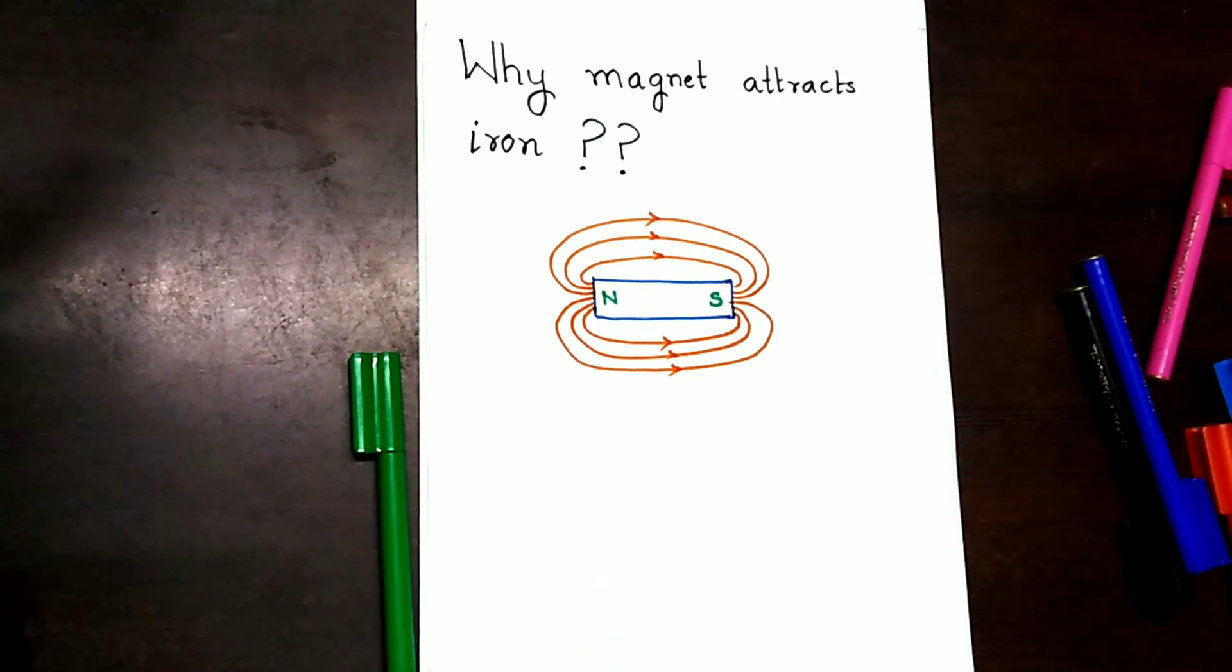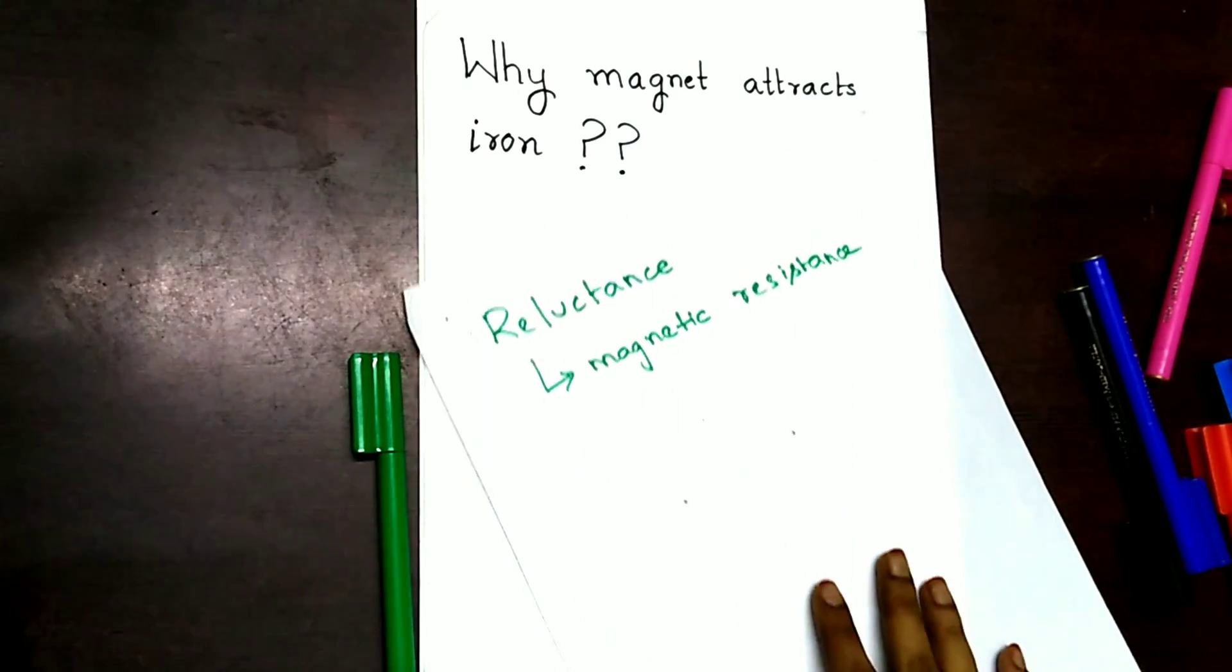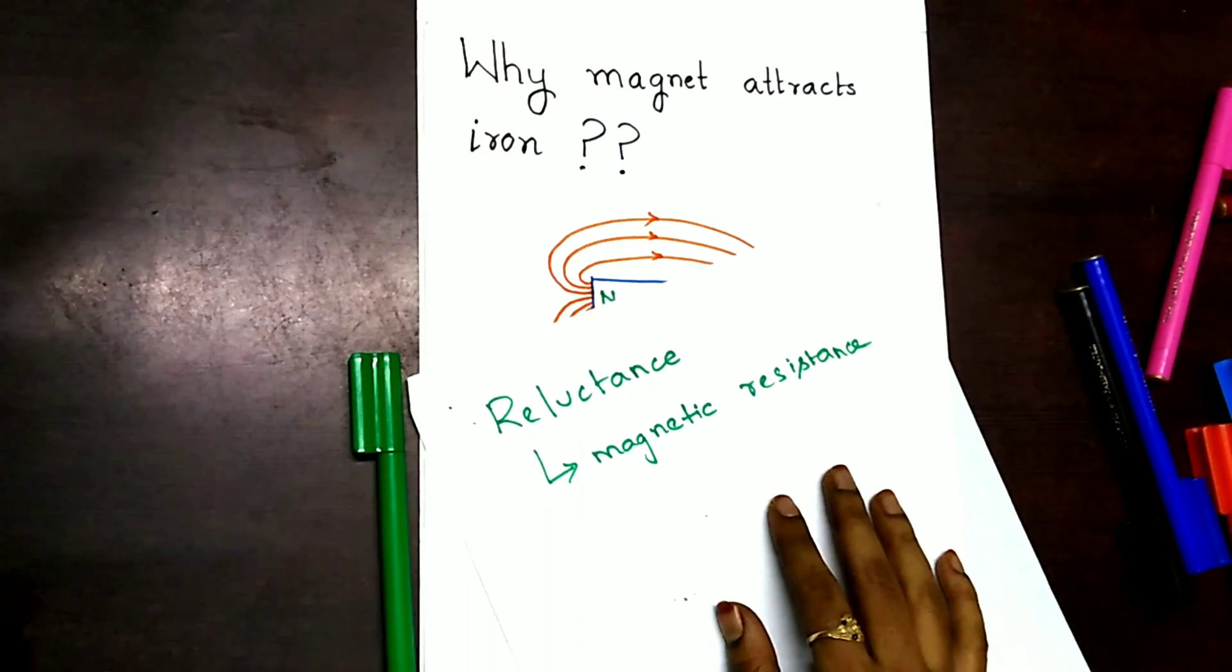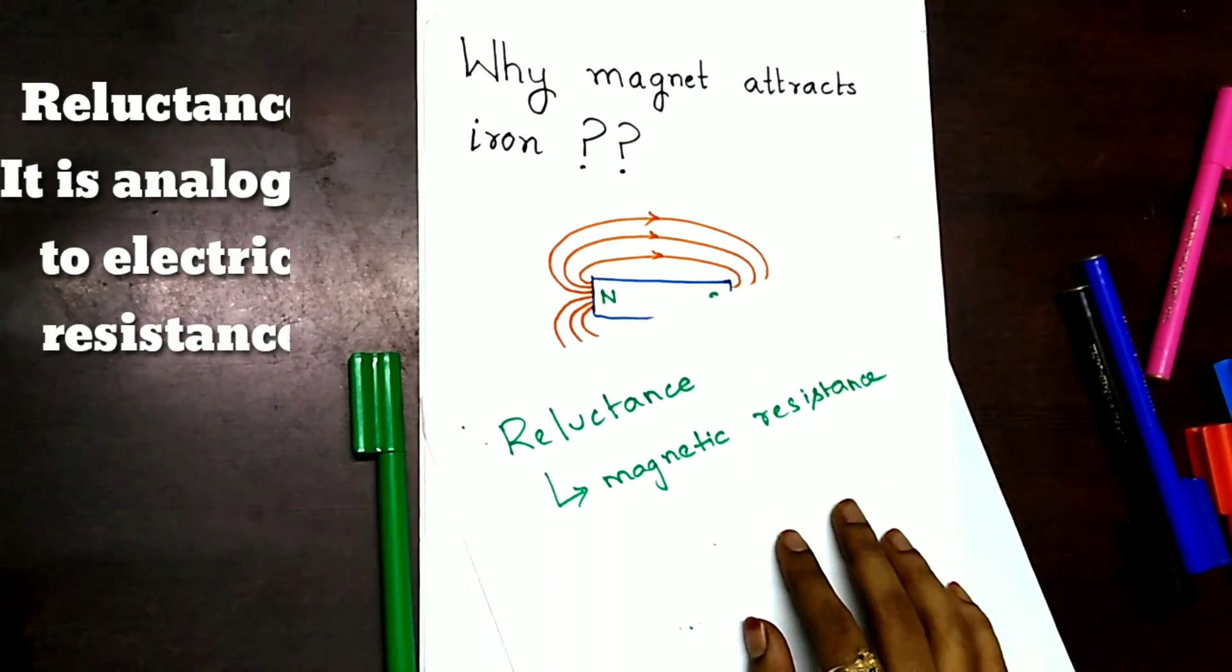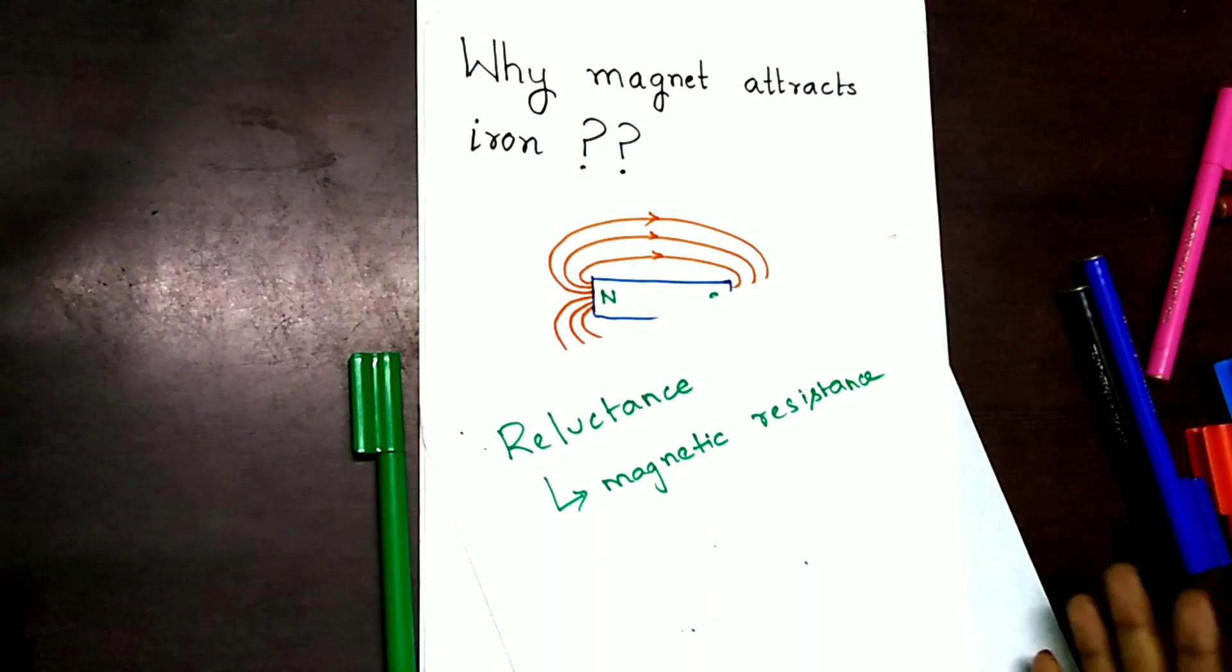firstly we have to discuss about something like reluctance. What is reluctance? Reluctance is magnetic resistance. Yes, it's just analogous to that of electrical resistance.